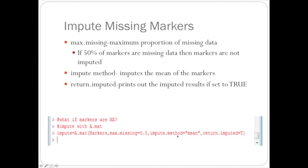The impute method is the mean, since we're imputing the population mean for that marker. I have return.imputed equal to TRUE, since I want to see the printout of the imputed results.